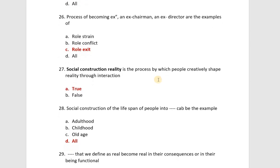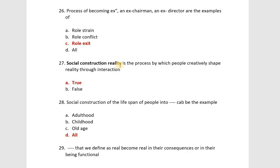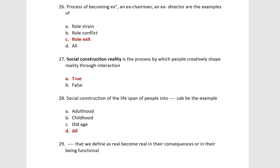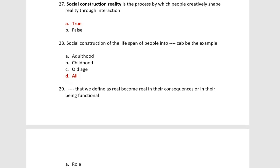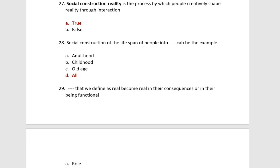Next: social construction of reality. People creatively shape reality through interaction — we call this social construction. The social construction of the life span divides people into stages such as adulthood, childhood, and old age.